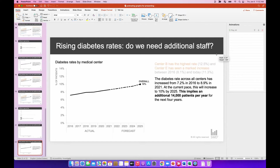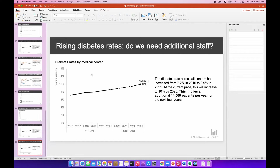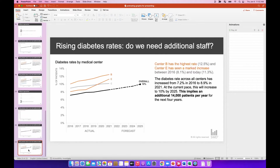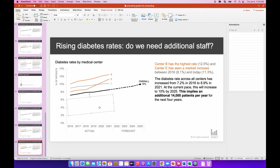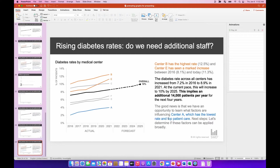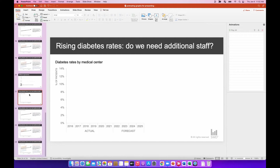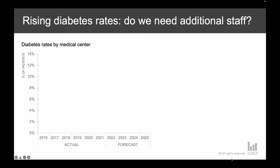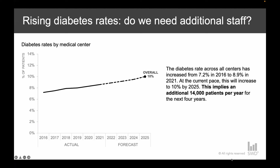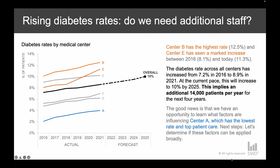I've got four text boxes covering up the lines and text I don't want to share. I duplicate the slide and simply start deleting the text boxes of the things I do want to reveal — starting with the centers that have the higher rate, then duplicating again and removing the last text boxes for the final slide. In presentation mode: the background, then the overall, then the higher rates, then the lower rates. It looks very similar to the previous two techniques but is a different approach.